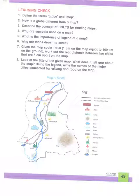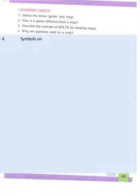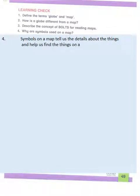The next question is: why are symbols used on a map? Symbols on a map tell us the details about things and help us find those things on a map. Very simple.